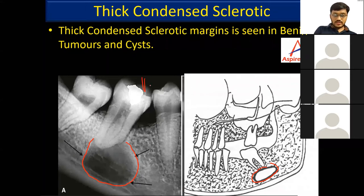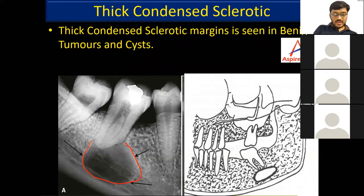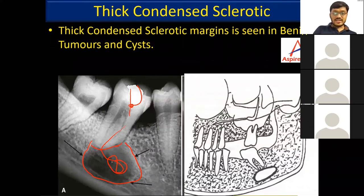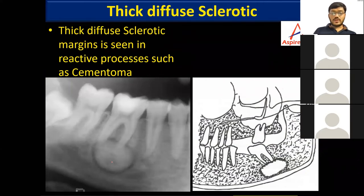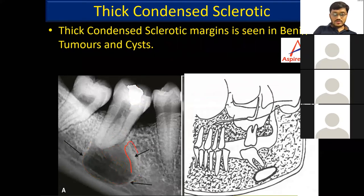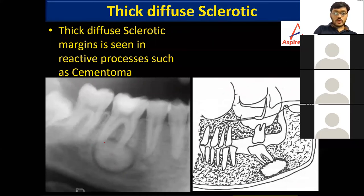Based on the radiograph, the likely diagnosis for the lesion with thick sclerotic margin and loss of lamina dura is a periapical cyst — larger in size, with what appears to be a deep restoration touching the pulpal area causing infection. The thick diffuse sclerotic margin — condensed sclerosis — is seen in reactive processes such as cementoma and periapical cemental dysplasia, where you can see the soft tissue capsule surrounded by a sclerotic margin.